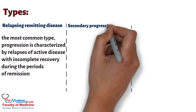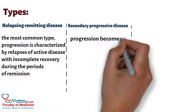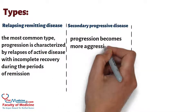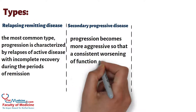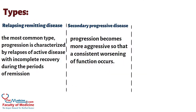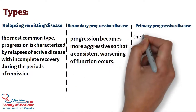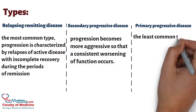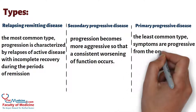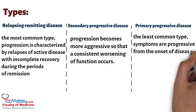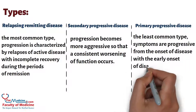Secondary progressive disease: Progression becomes more aggressive so that a consistent worsening of function occurs. Primary progressive disease is the least common type, with symptoms progressive from the onset of disease and early onset of disability.